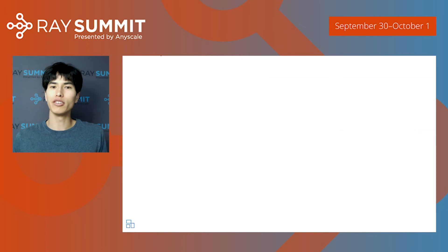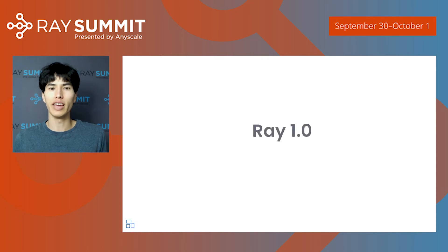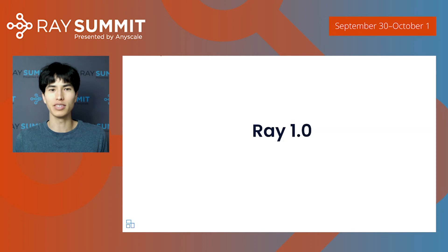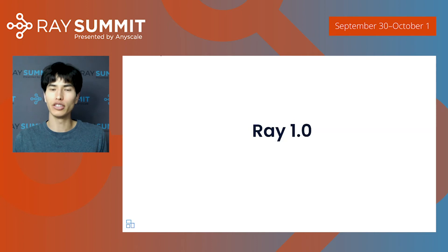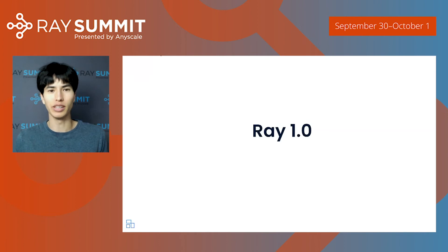As Ray is being used more and more in production settings, stability and maturity has become an increasing focus. Today we're announcing Ray 1.0. This is a huge milestone and achievement for the community, and it's the product of work from many people and companies. This indicates API stability for the core Ray API. It's the first step toward making sure that Ray is production-ready at production scale, and the beginning of a serious commitment to the project's maturity and stability. We're excited for you to try it out and give us feedback.